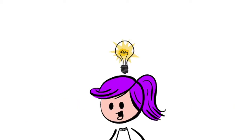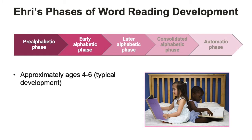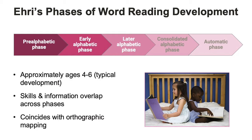Now that we've defined those key terms, let's dive into Ehri's Phases. There are five phases in Ehri's Continuum of Word Reading Development. These phases are common to most typically developing children from approximately ages 4 to 6. The borders between phases are not really solid borders — the skills and information that children learn about overlap across phases. As children progress through these phases, their orthographic mapping also expands.